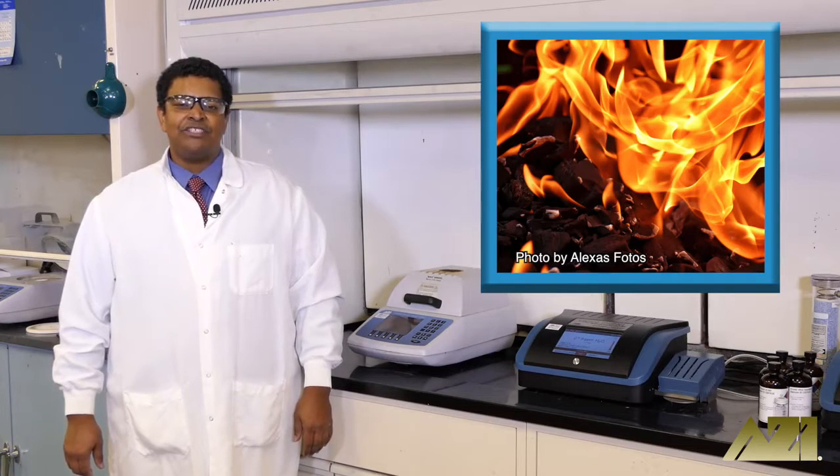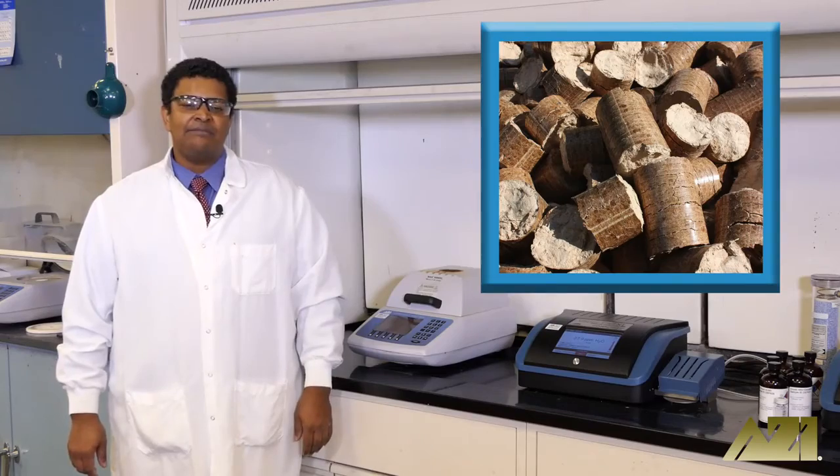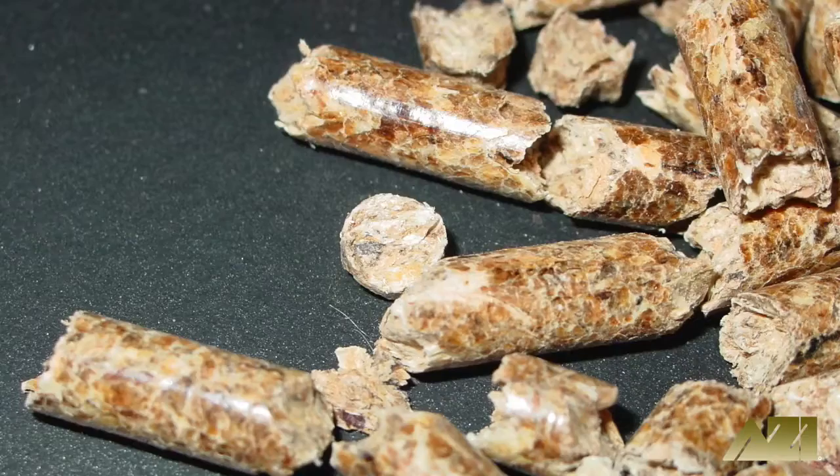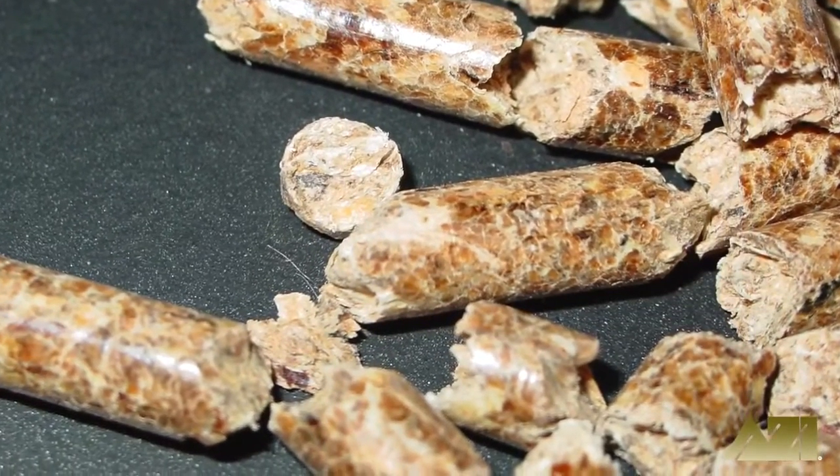An excess of moisture decreases pellet density and durability resulting in a weakened, sometimes even soft final product. Too little moisture on the other hand can lead to fragile cracked pellets and charcoal.